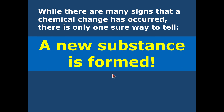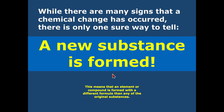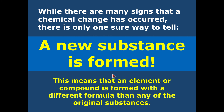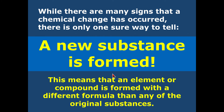At the end of the day, the number one way you can tell that a chemical reaction has occurred is because a new substance has been formed. And that, my friends, is the end of your lesson on physical and chemical changes — when elements undergo some type of change or experience a reaction.